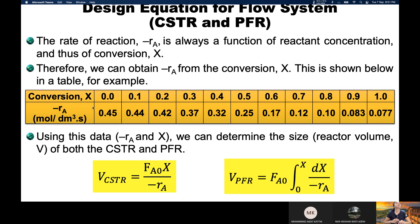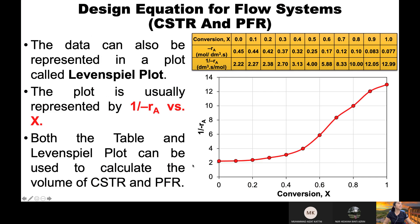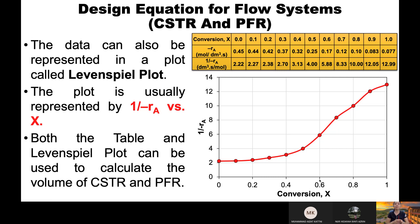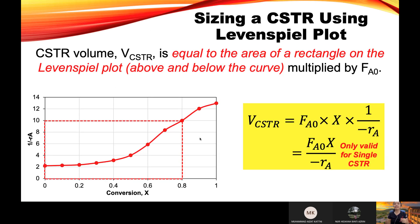This information can also be presented in the form of a plot called the Levenspiel plot. The Levenspiel plot helps us understand reactor sizing. The difference is: in the table, the data is conversion versus minus rA, but in the Levenspiel plot, the y-axis is 1 over minus rA and the x-axis is conversion. When doing calculations, be very careful whether you are using the plot or the table.